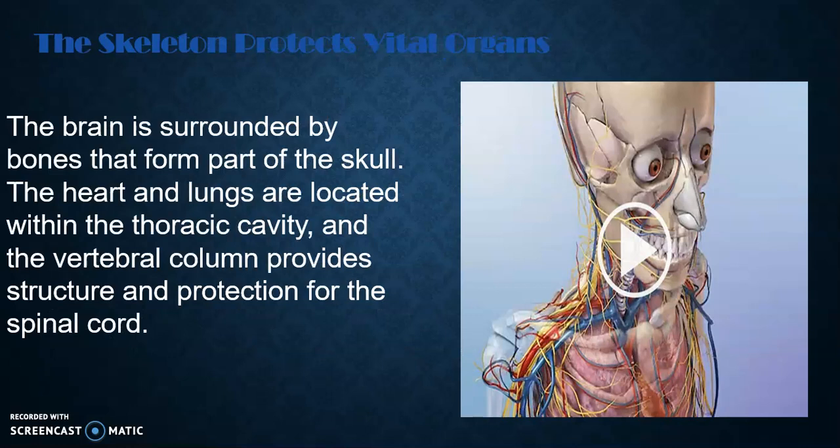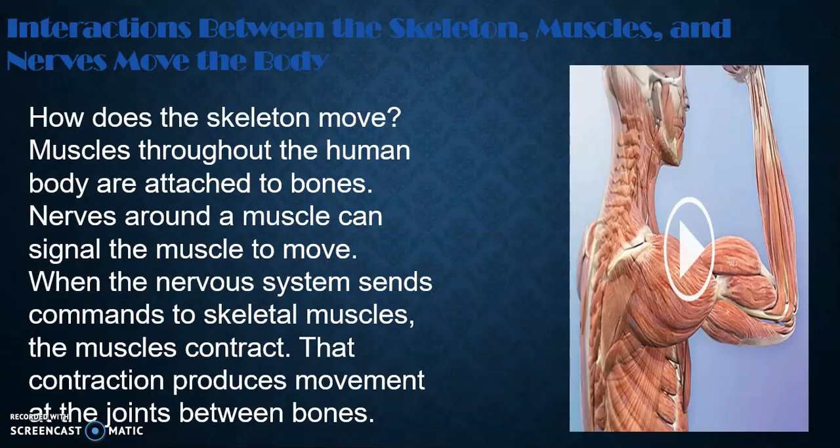The skeleton protects vital organs. The brain is surrounded by bones that form part of the skull. The heart and lungs are located within the thoracic cavity, and the vertebral column provides structure and protection for the spinal cord. Muscles throughout the human body are attached to bones, and nerves around a muscle can signal the muscle to move. When the nervous system sends commands to skeletal muscles, the muscles contract, and that contraction produces movement at the joints between bones.